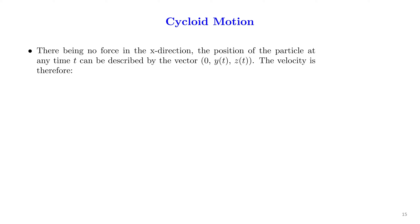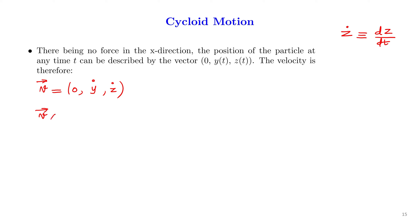Let's try to mathematically account the cycloid motion. There being no force in the x direction, the position of the particle at any time t can be described by the vector (0, y(t), z(t)), and the corresponding velocity would be v equal to (0, y-dot, z-dot), where z-dot indicates dz/dt. When we calculate v cross B, this is the determinant with components (0, y-dot, z-dot) for velocity and (B, 0, 0) for the magnetic field along the x direction, giving B·z-dot·ŷ minus B·y-dot·ẑ.